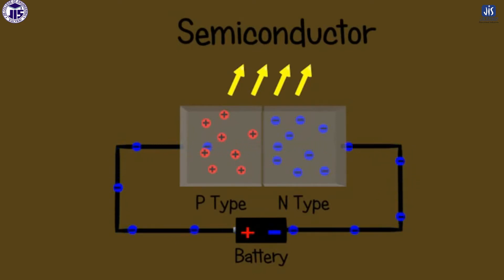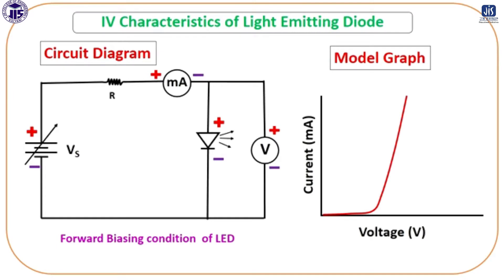Now, coming to the experimental part, we are using a circuit diagram like this. We are using an ammeter, then there is a resistance, then there is an LED — this is the symbol of the LED — then there will be a supplied voltage. This is a forward bias connection, and a voltmeter will be connected in parallel.